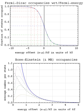Particle statistics is a particular description of multiple particles in statistical mechanics. Its core concept is a statistical ensemble that emphasizes properties of a large system as a whole at the expense of knowledge about parameters of separate particles. When an ensemble consists of particles with similar properties, their number is called the particle number and usually denoted by n.